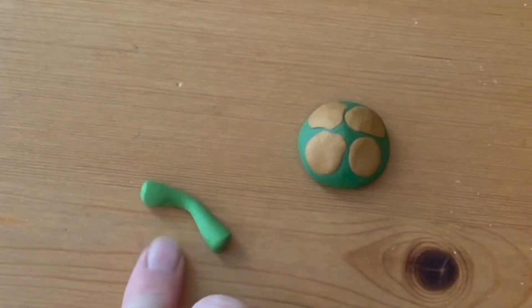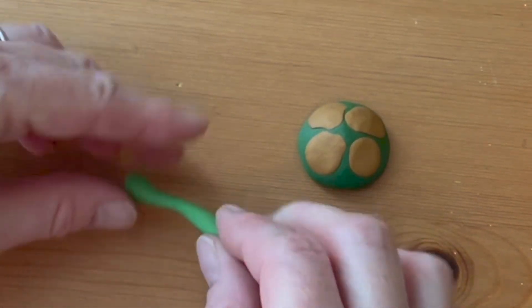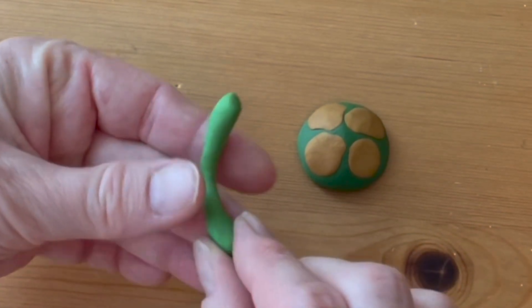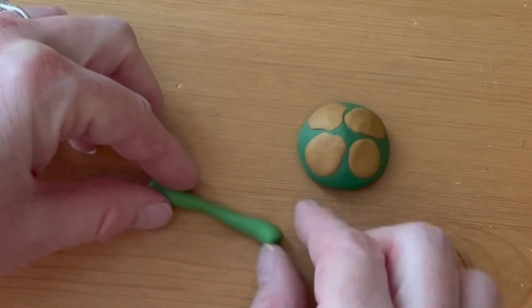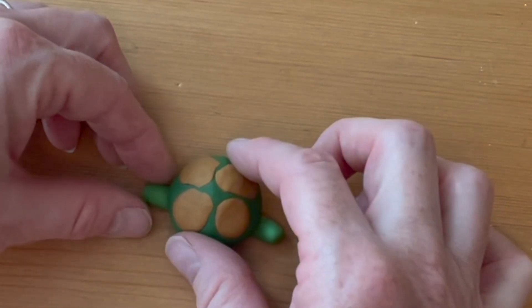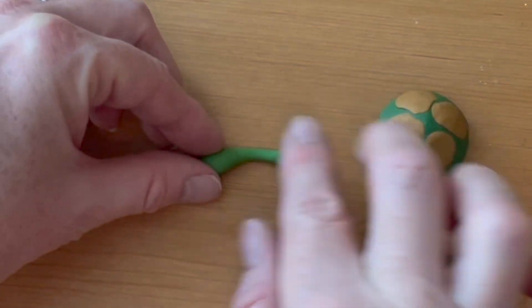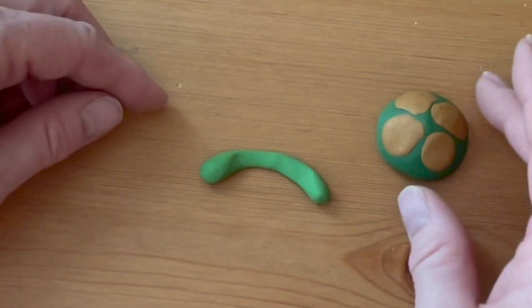Roll out a snake of light green clay that's thinner in the middle and round the ends to make the front legs of the turtle. Make sure it's the right length by placing the shell on top so that just the little legs are sticking out, and then flatten the middle part.